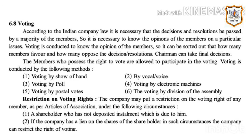The chairman can take the final decision. The members who possess the right to vote are allowed to participate in voting. Voting is conducted by the following methods: First, voting by show of hand. Second, by vocal or voice. Third, voting by poll. Fourth, voting by electronic machines. Fifth, voting by postal votes. Sixth, voting by division of the assembly.